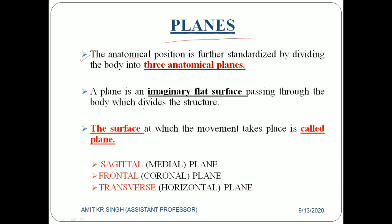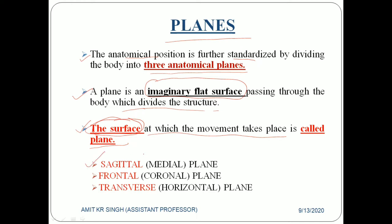The anatomical position can further be divided into three anatomical planes. That is what I explained — the anatomical position is our reference point from where we can identify the planes and axes. A plane is an imaginary flat surface passing through the body. In easy terms, the surface at which the movement takes place is called a plane. There are three types of plane: sagittal, also known as medial plane; frontal, also known as coronal plane; and transverse, also known as horizontal plane.